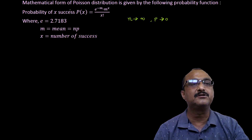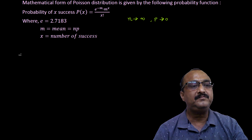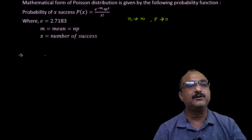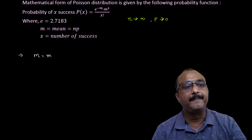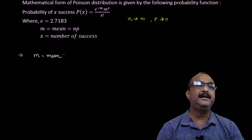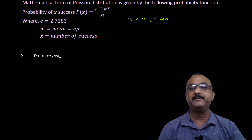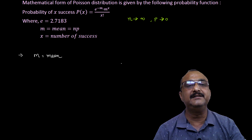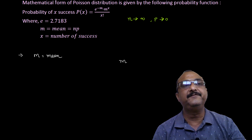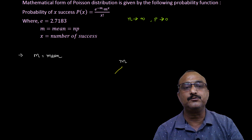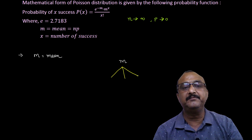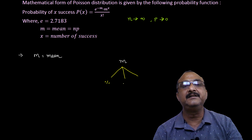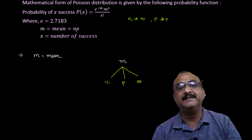We will see how to find the value of e raised to minus m. Here m equals mean, and mean is the parameter of Poisson distribution. There are three types of problems to find m: when percentage is given, when probability is given, and when average is given.